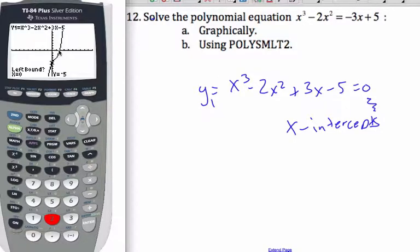My left bound, well if I estimate that's about two, so my left bound I want to be to the left of two, and zero is a good left bound, so I'll type in zero.